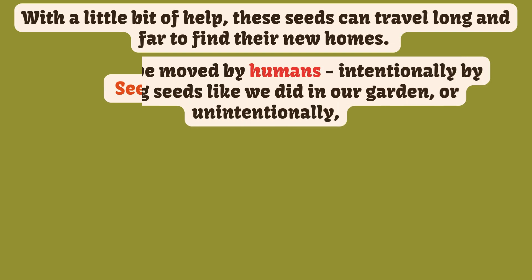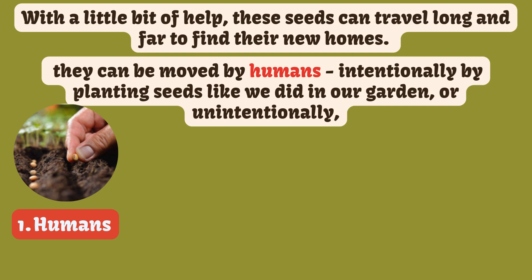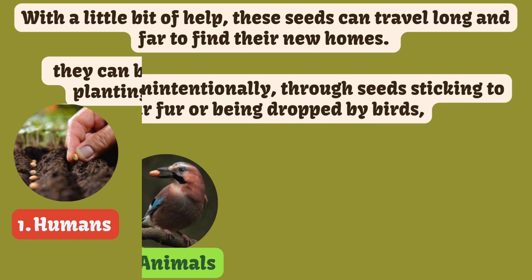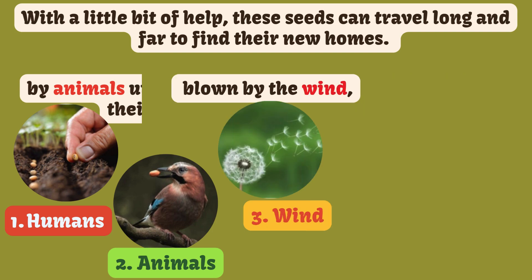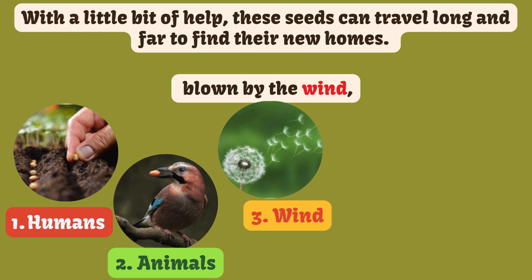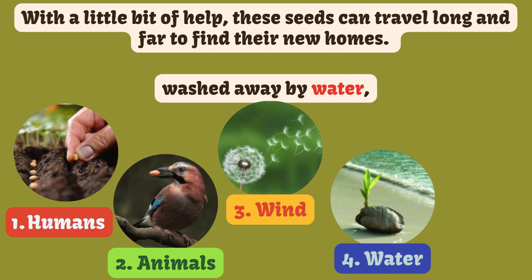Seed dispersal can happen in five ways. Seeds can be moved by humans intentionally, by planting seeds like we did in our garden, or unintentionally by animals — through seeds sticking to their fur or being dropped by birds. Seeds can also be blown by the wind or washed away by water.